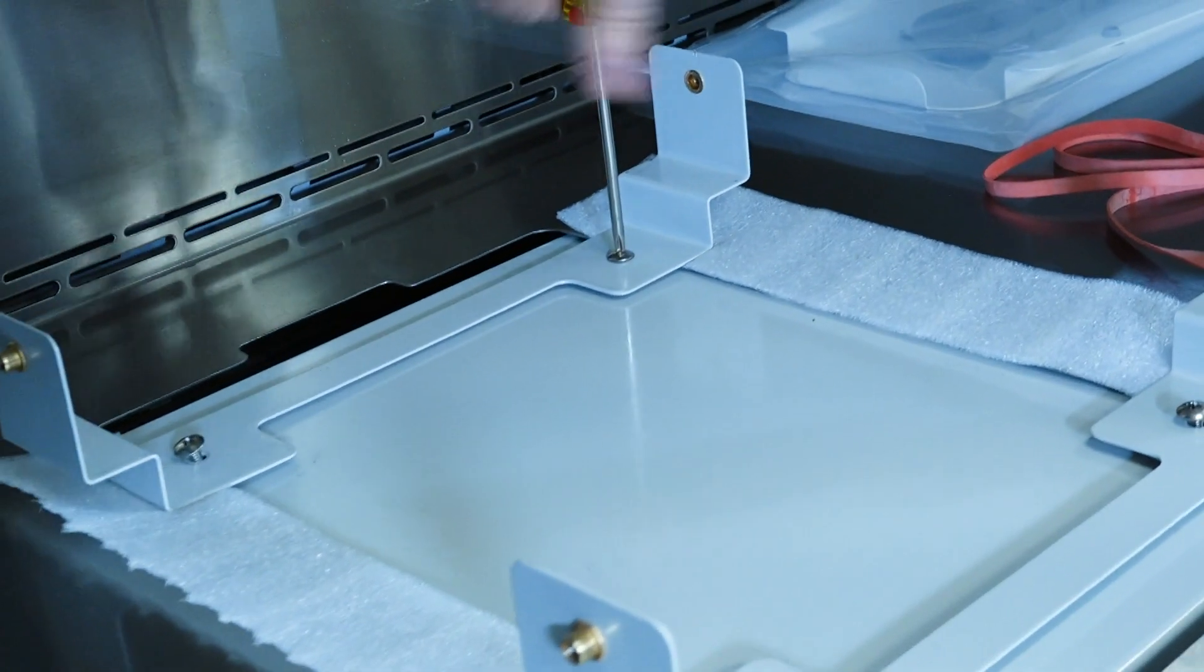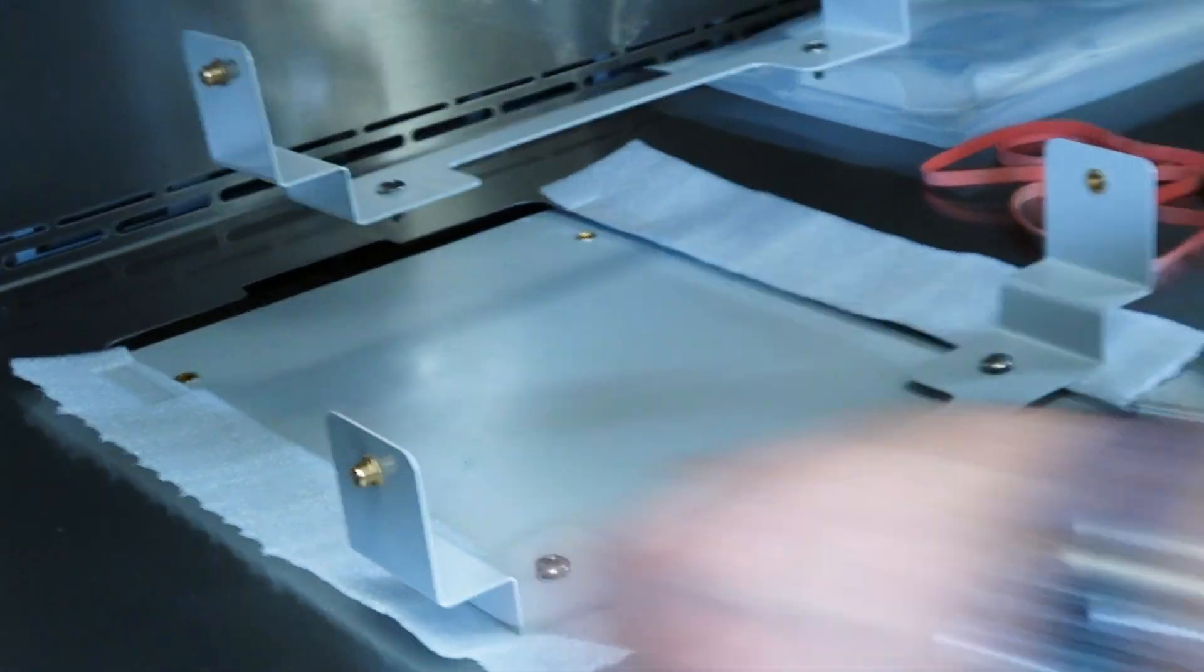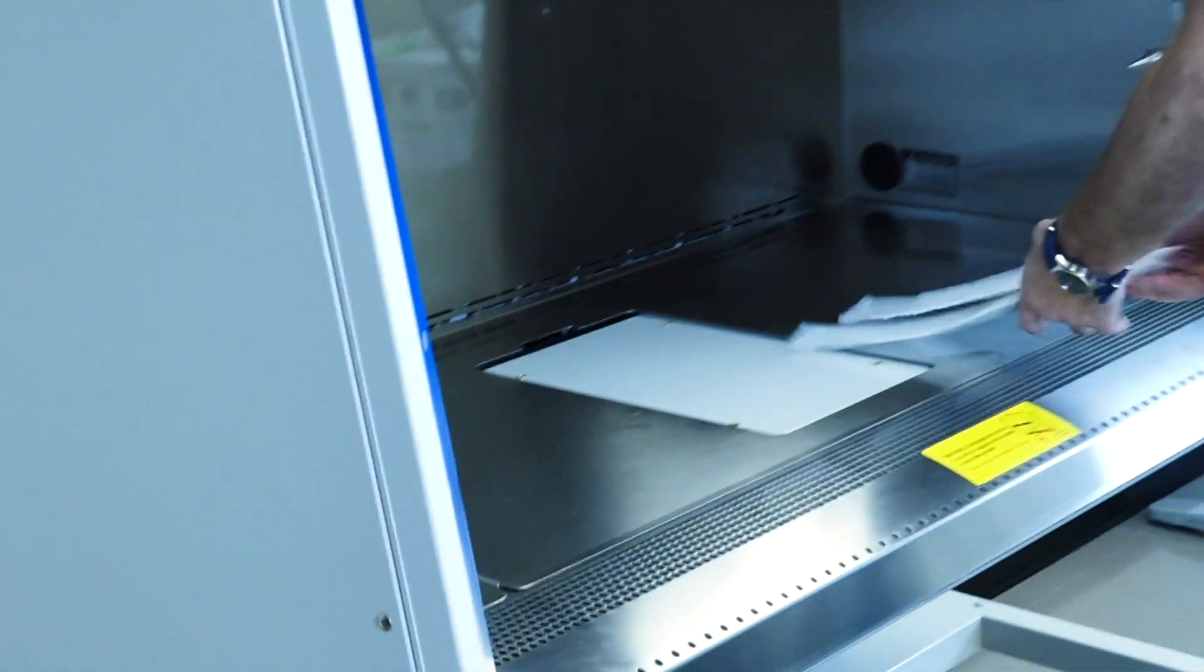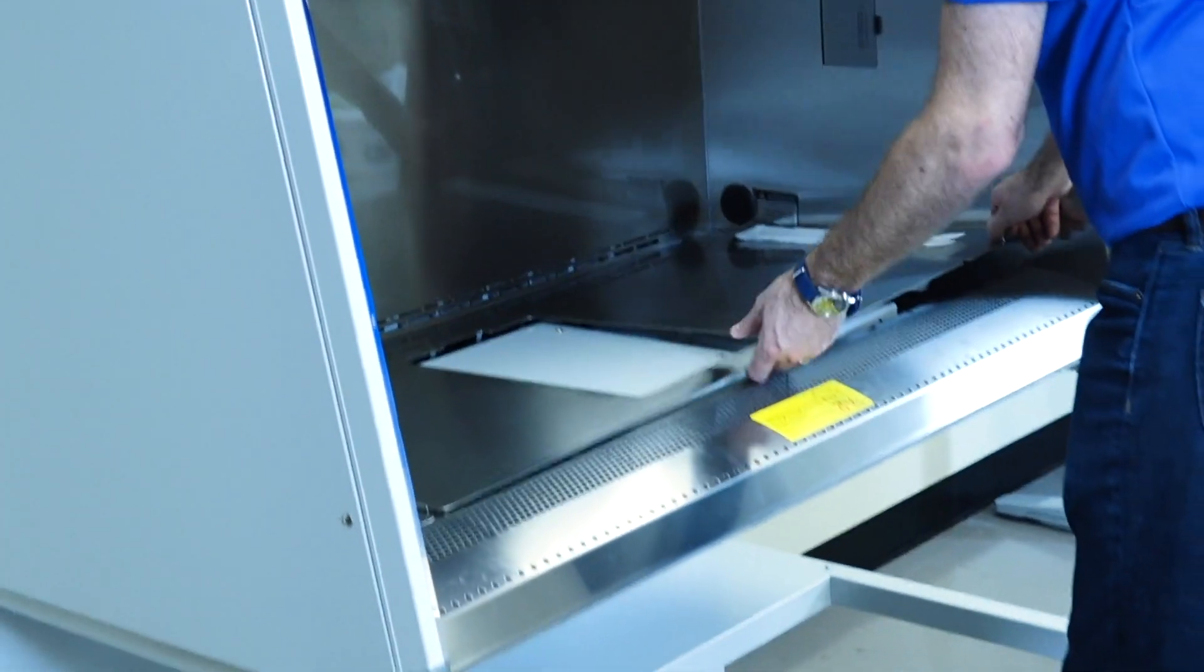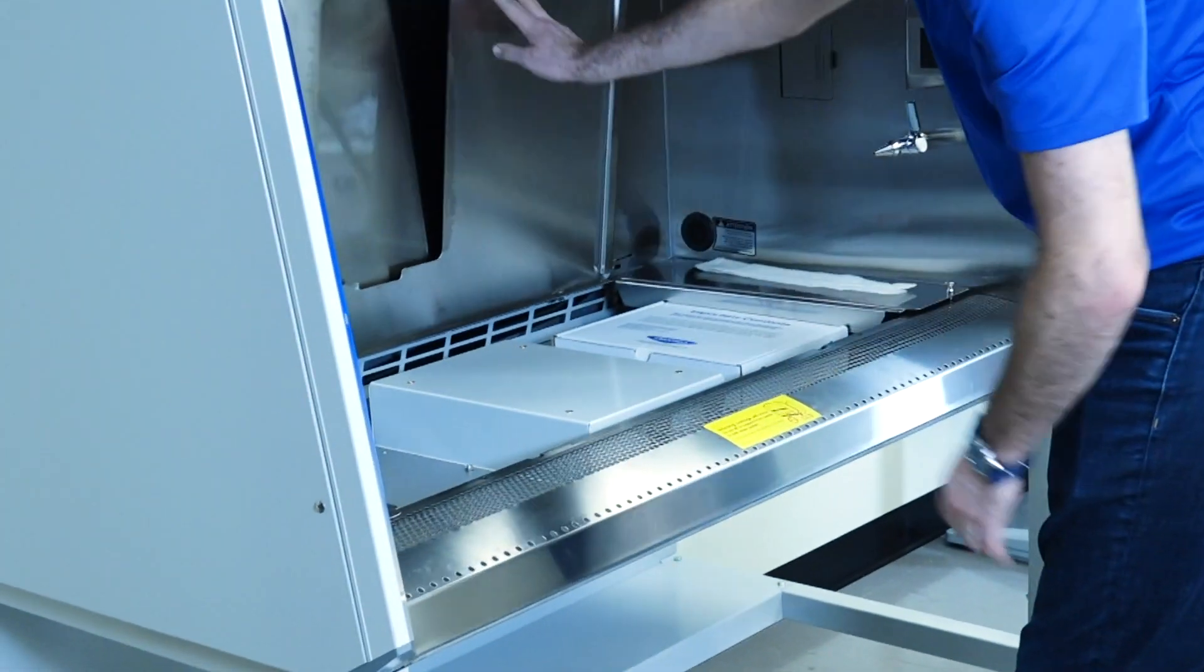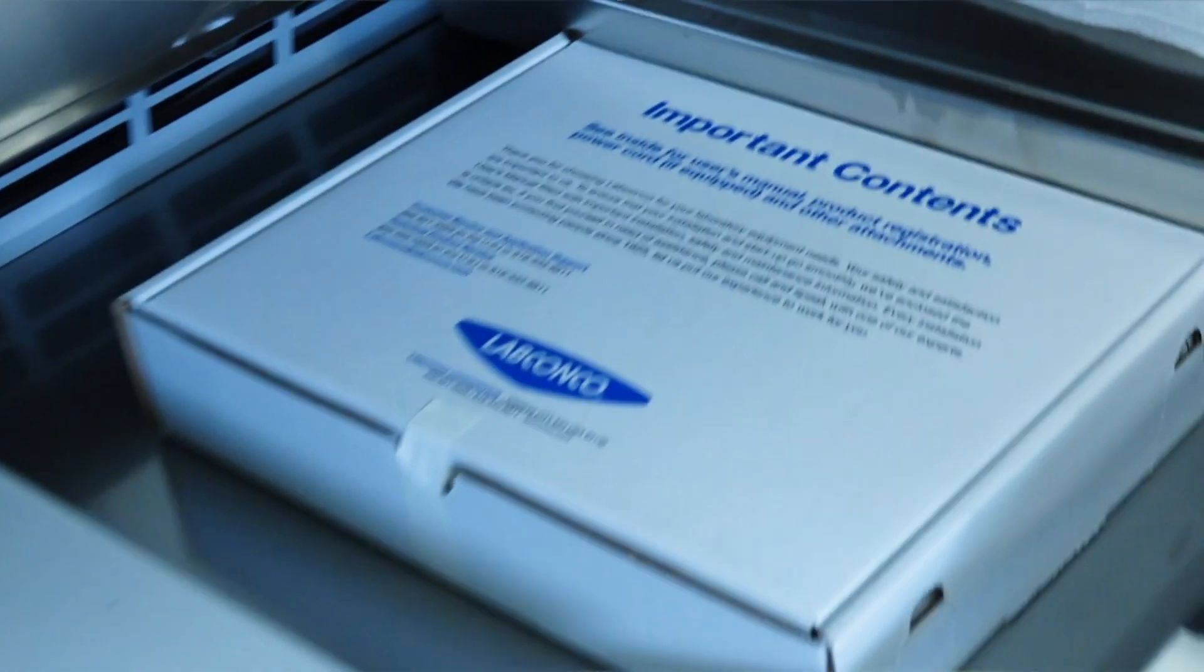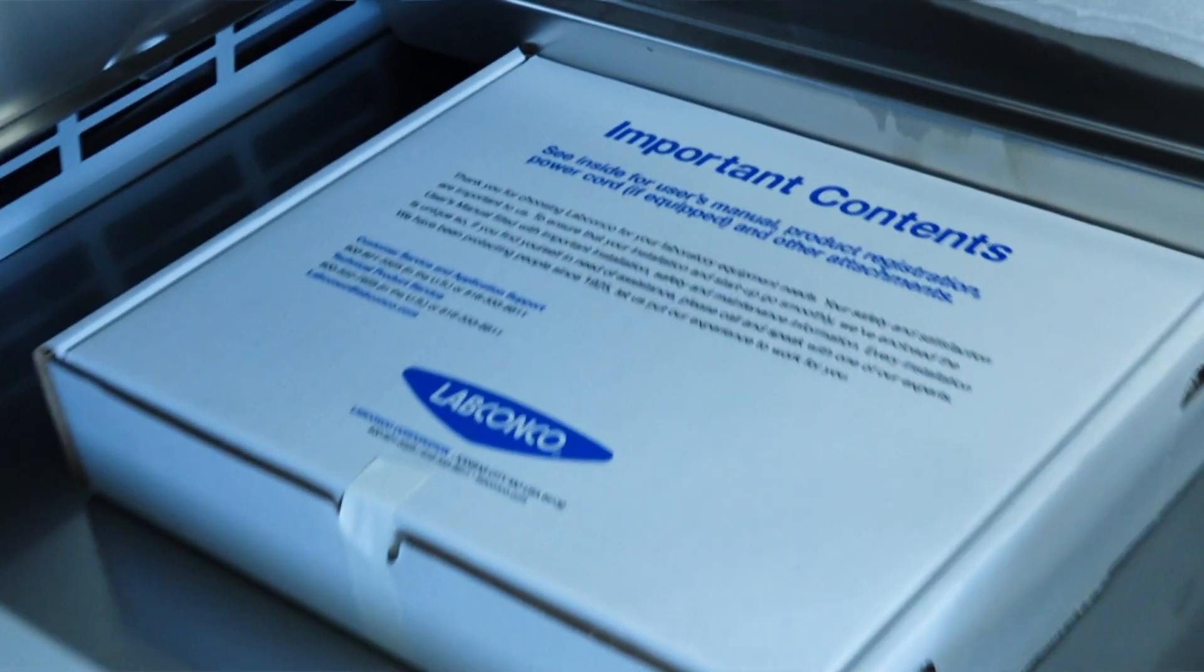These screws can be discarded along with the two shipping brackets they were attached to. Next, lift the work surface and remove the BSC parts box. Check the box to ensure all contents are present.